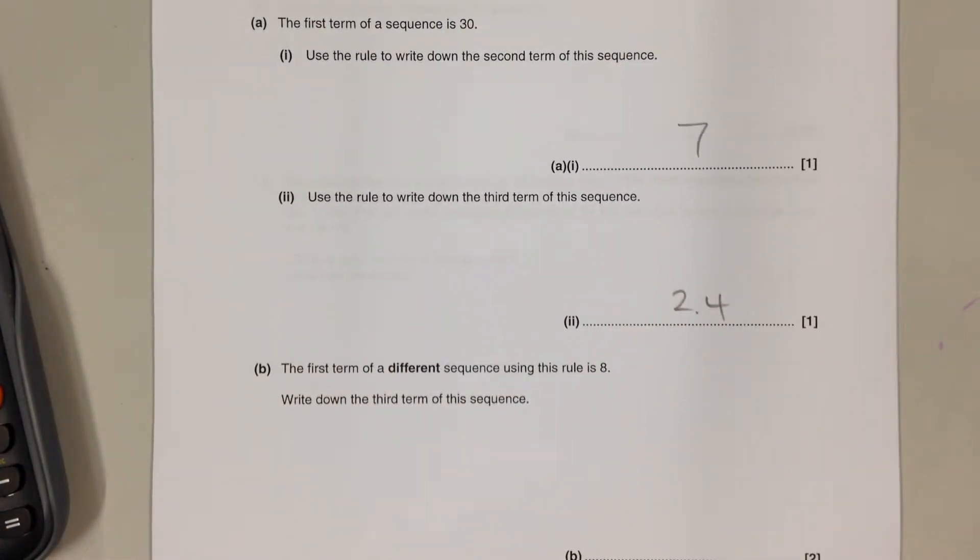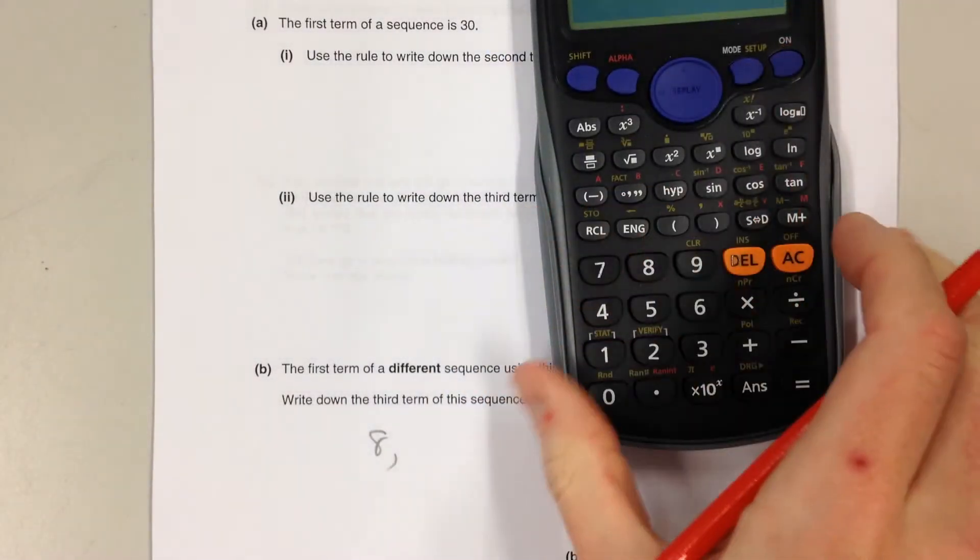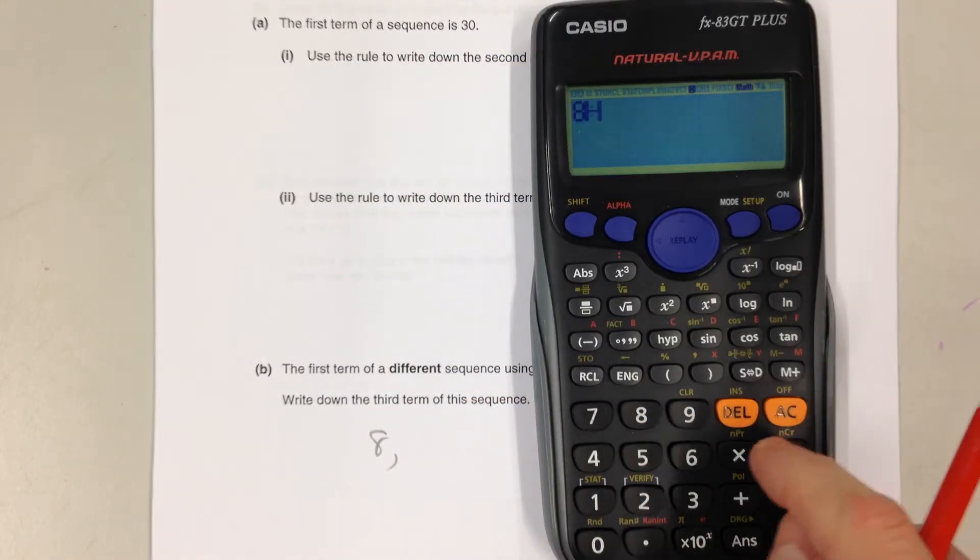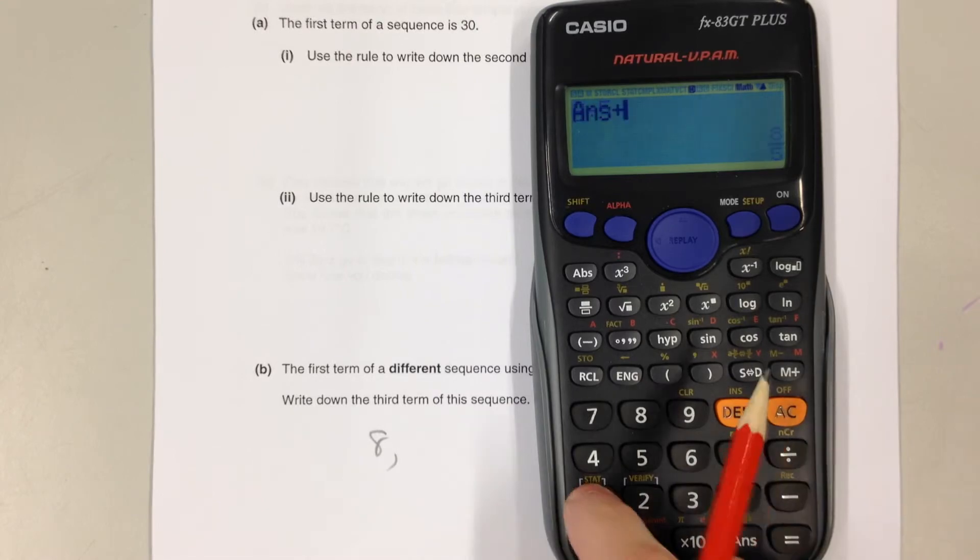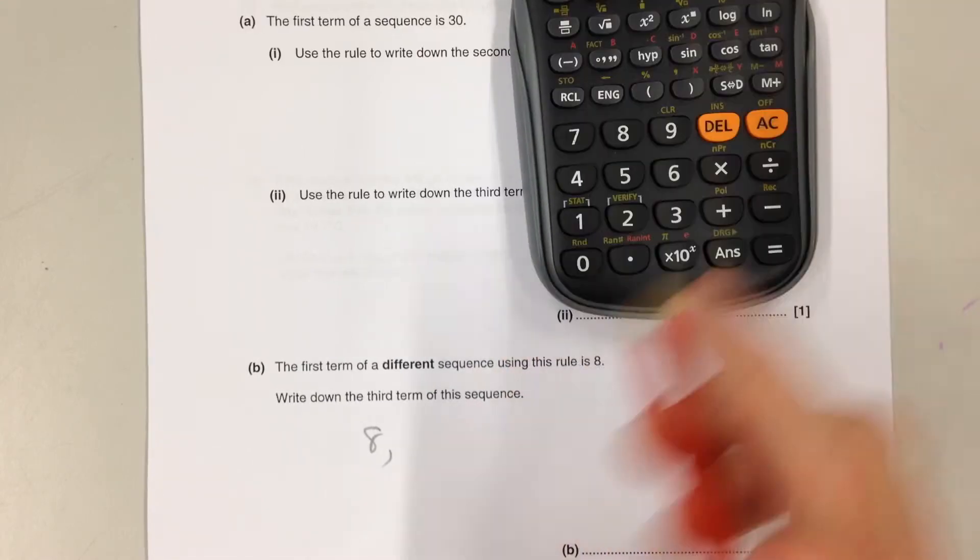Part B, we've got a different sequence, but using the same rule, we need to write down the third term of the sequence. The first term is 8, the second term is found by dividing the 8 by 5 and then adding 1, which is 2.6.